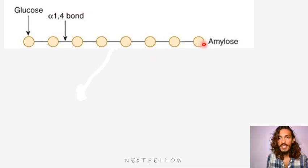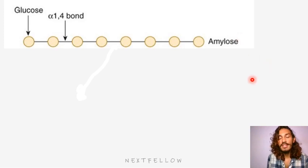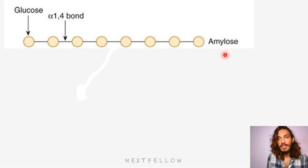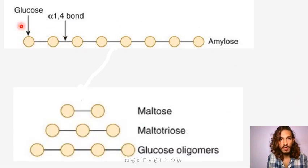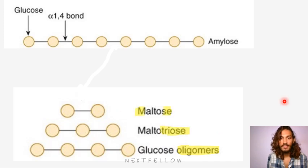Now, when amylose is digested, digestion starts off in your mouth, in saliva, because of the activity of saliva which has ptyalin — so that amylase acts. What it does is this is broken down into different fragments: it can be a 2-glucose molecule — that is maltose — or it can be 3 — maltotriose — or it can be oligomers. So glucose oligomers, maltotriose, maltose — this is what happens when amylose is digested by amylase.